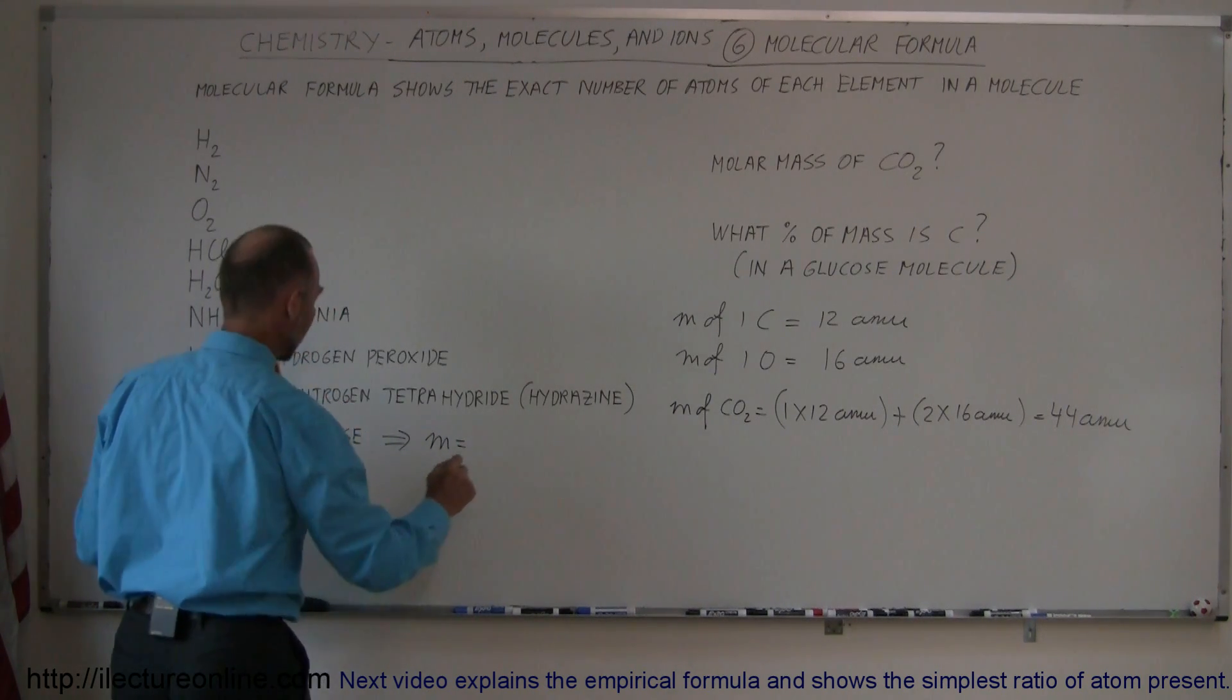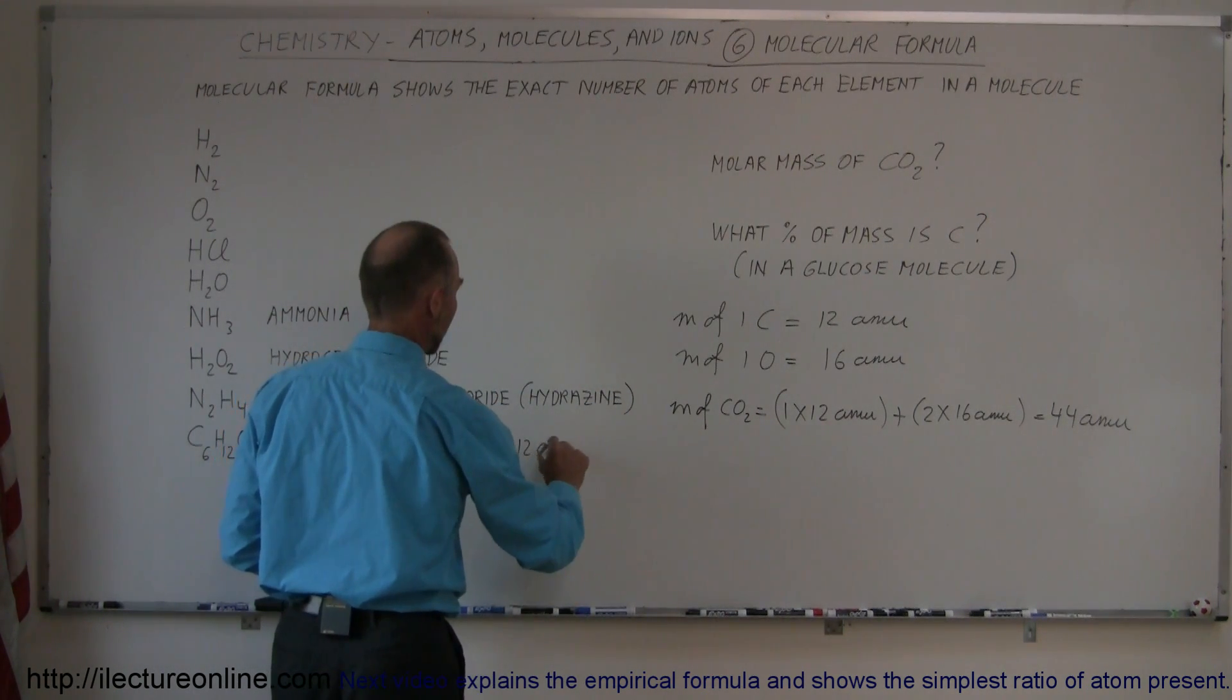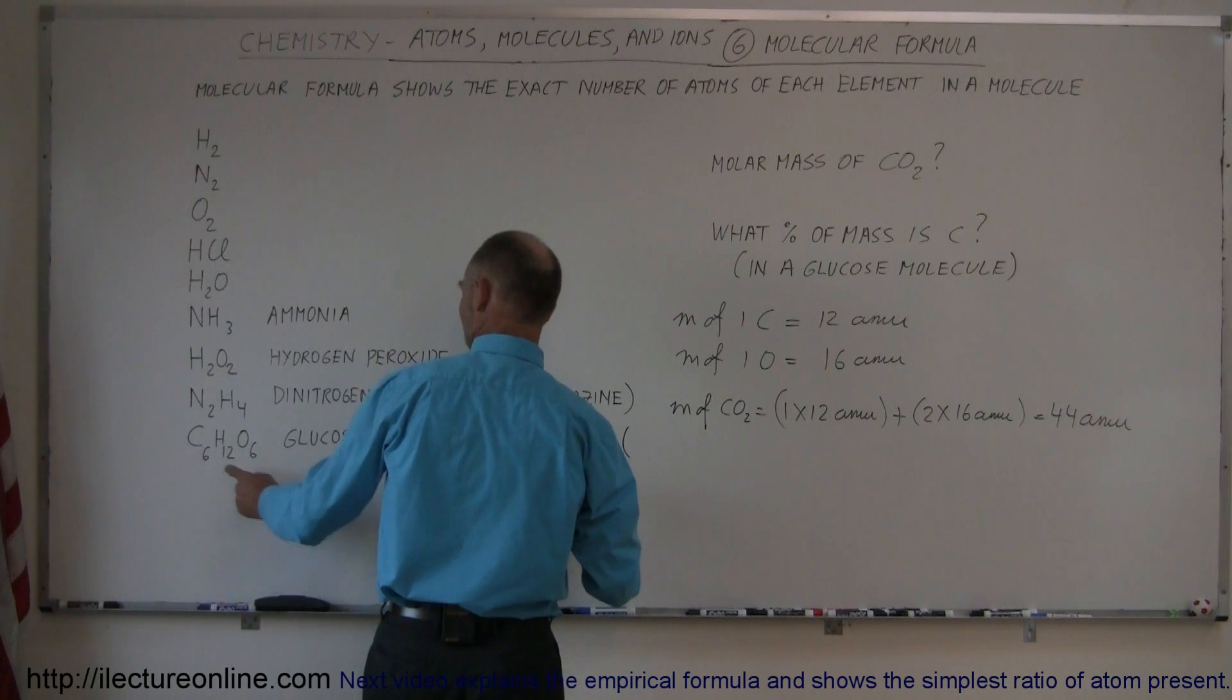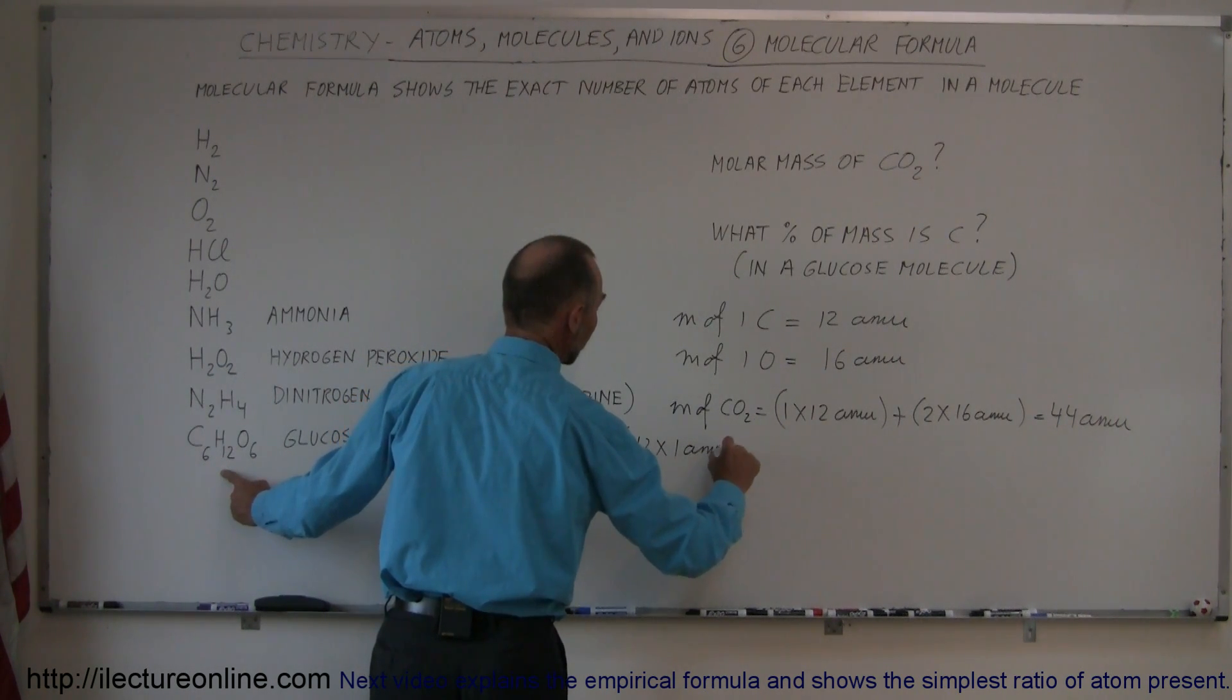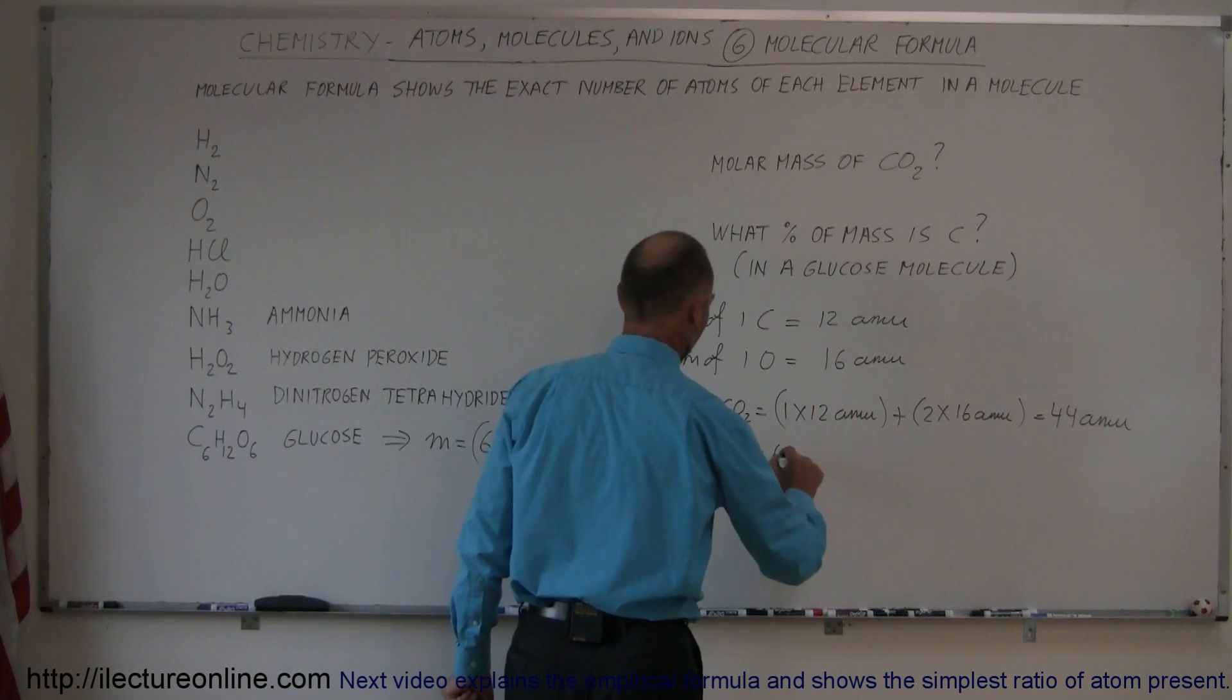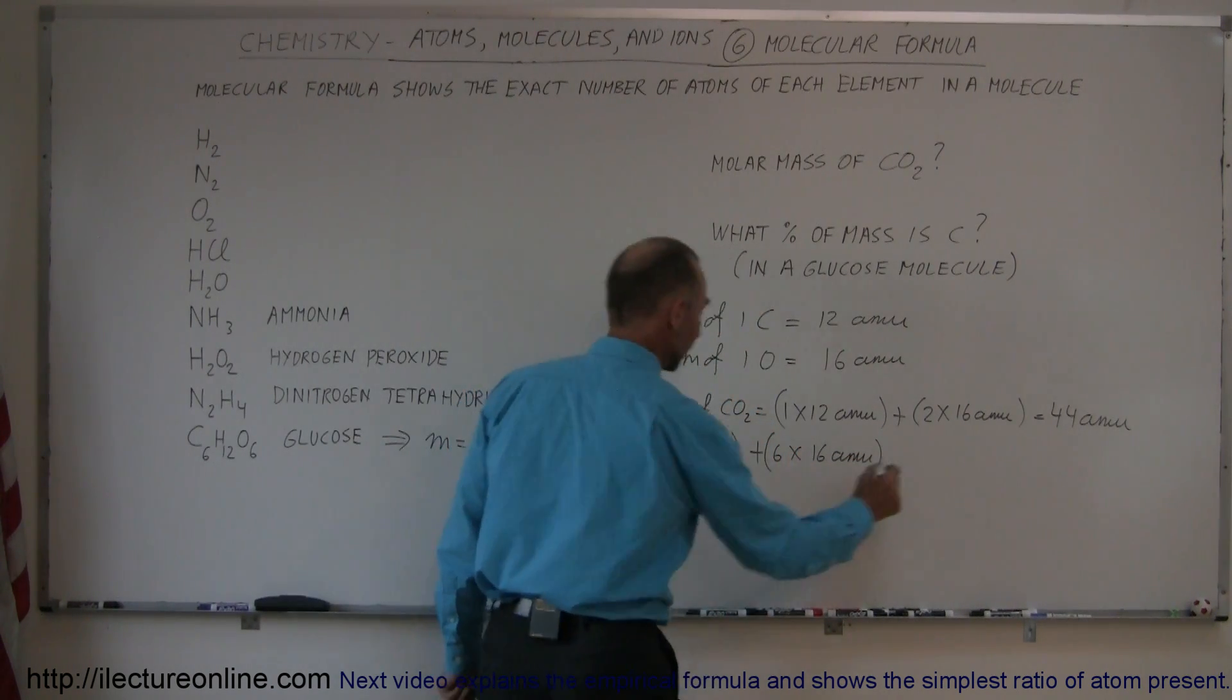So we could say that this is equal to, so the mass is equal to six times the mass of a carbon atom, so six times 12 AMUs, that would be the mass of all the carbon atoms in that molecule, plus we have 12 times 1 AMU, because the mass of a hydrogen atom is roughly 1 AMU, so we have 12 of those, plus six times, and we have oxygen, which is 16 AMUs.